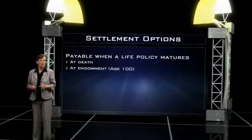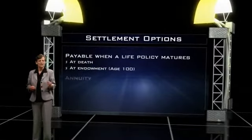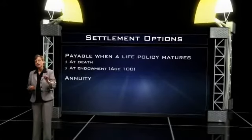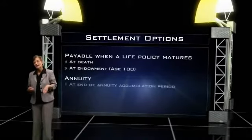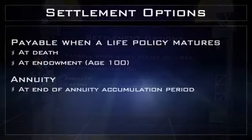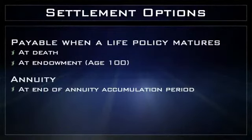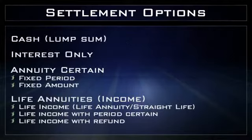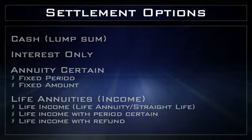Settlement options are also available on an annuity. When the annuity owner gets to the end of the accumulation phase and they want to start taking money out of the annuity, they can choose one of these settlement options. And the settlement options are cash, interest only, annuity certain, and life income.